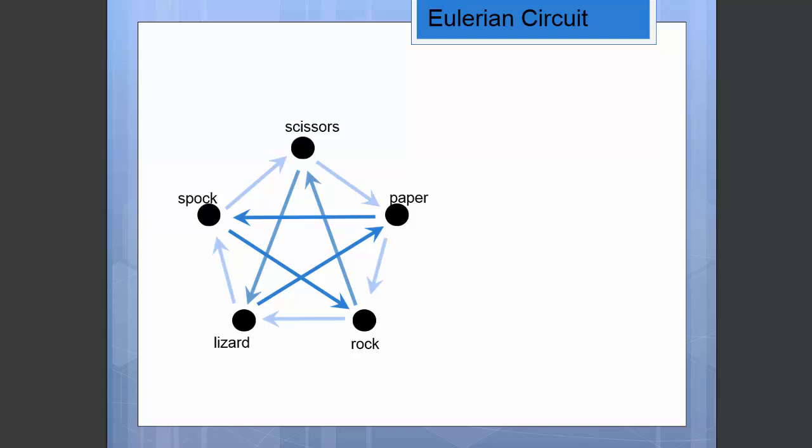We also saw that type of game is really represented by a regular tournament which is a complete graph where every edge has been given a particular direction so that any given vertex always has an equal number of edges coming in as going out. In this particular case we have every vertex has in degree 2 and out degree 2. So there we have a regular tournament.